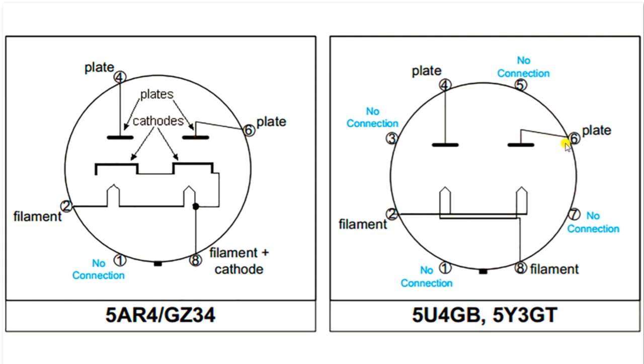Again, four and six are your plates that go to the power transformer. And sometimes when a 5AR4 is put into an amp, they still draw the diagram like this and they don't draw all these elements in because at the end of the day it really doesn't matter.